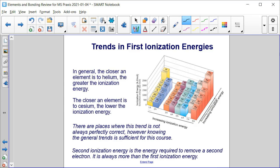Generally speaking, as you go from bottom left to top right, the ionization energy increases. There are places where this trend is not always perfectly correct, but knowing these general trends is sufficient at this time in this course.